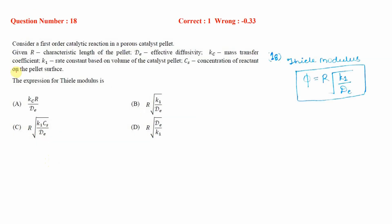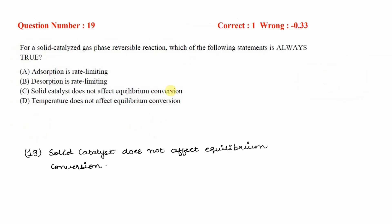This is a simple problem asking for the expression for the Thiele modulus. The correct option is B, where the Thiele modulus is represented as R times the square root of k1/De, where R is the length of the pellet, De is the effective diffusivity, and k1 is the rate constant.